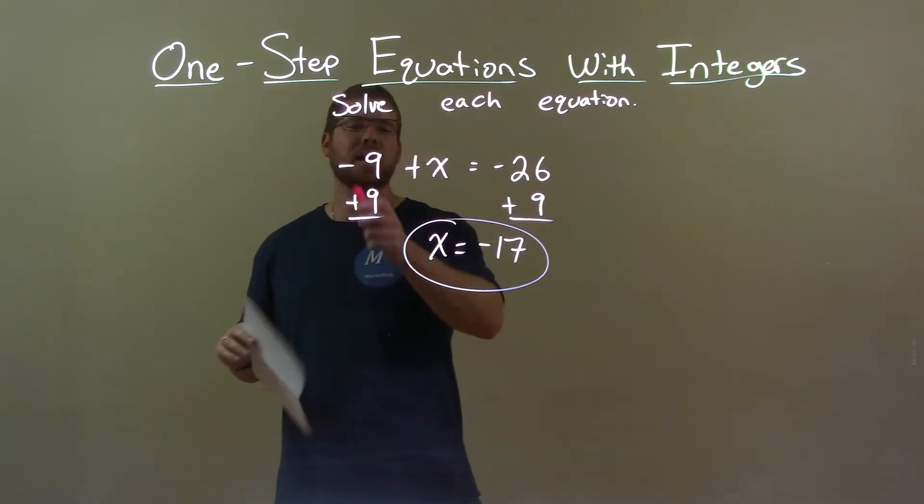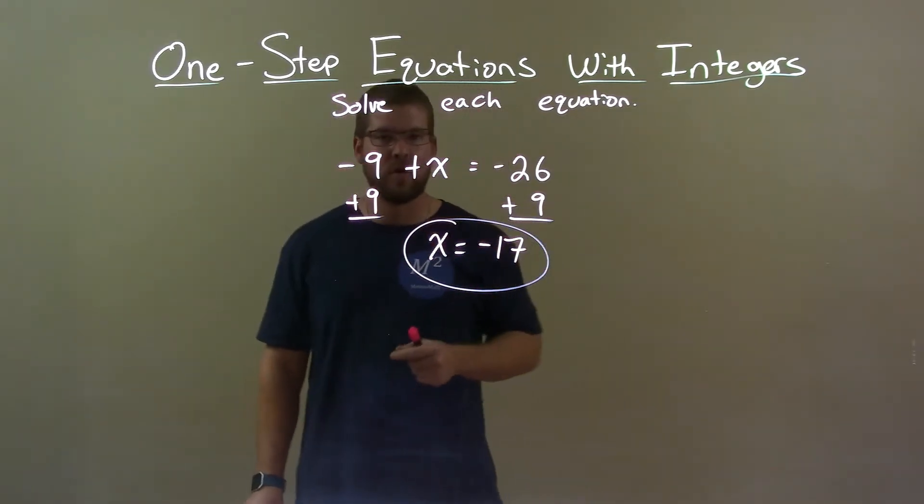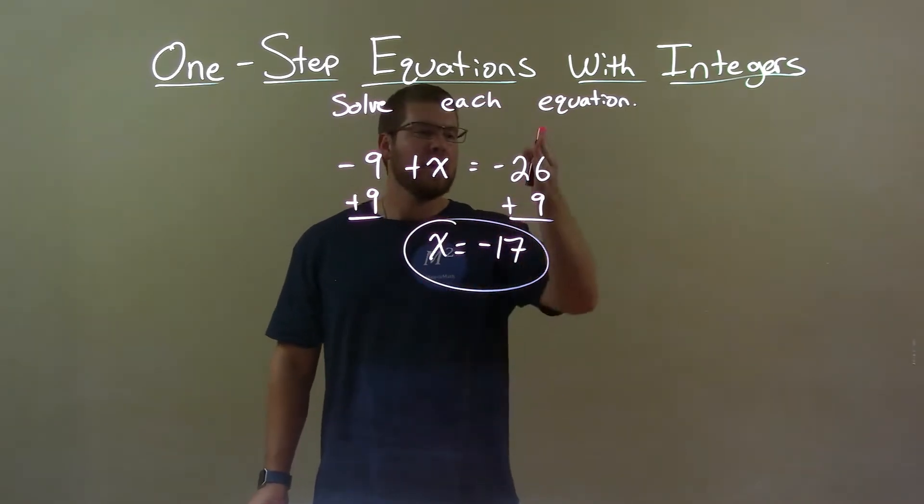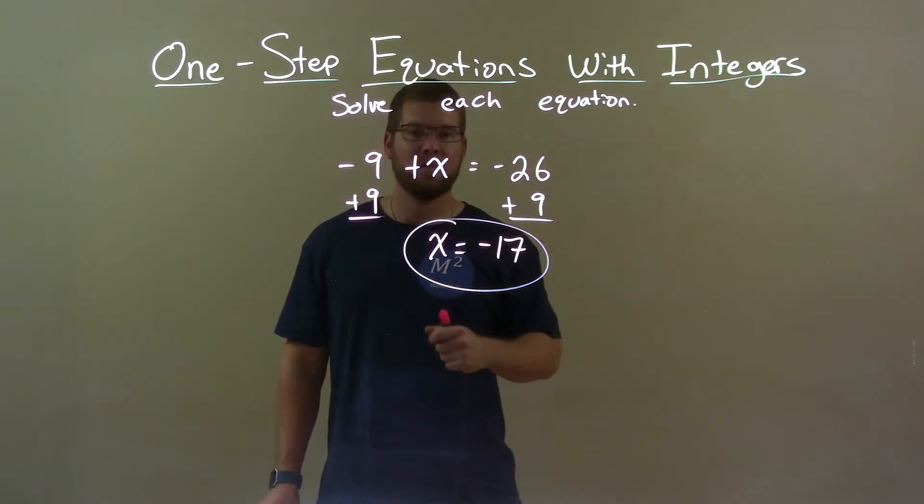Quick recap: we're given negative 9 plus x equals negative 26 and we have to solve for x. I add 9 to both sides, which gets me x by itself. Negative 26 plus 9 is negative 17. So again, final answer x equals negative 17.